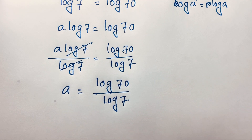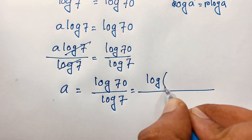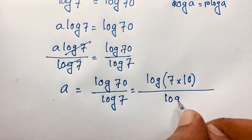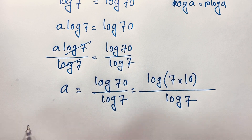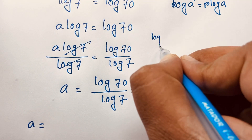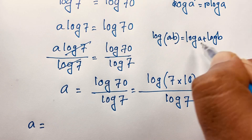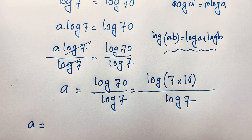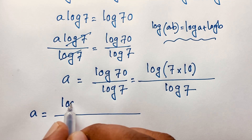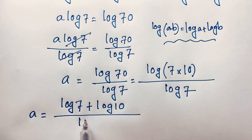Now you can see here, log 70 — you can write log 7 times 10, since 7 times 10 equals 70 — over log 7. Using the product rule for logarithms, log(7 × 10) expands to log 7 plus log 10, over log 7.